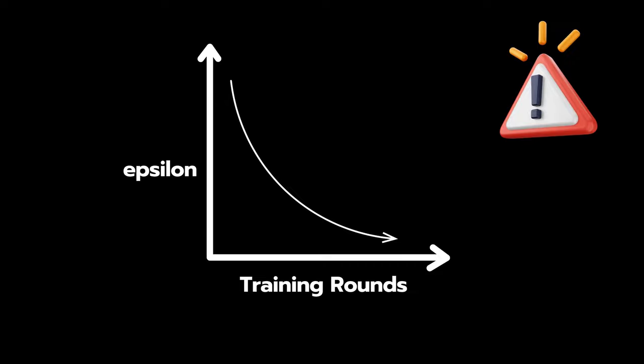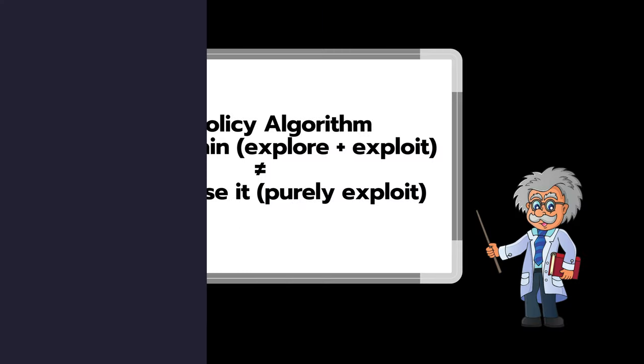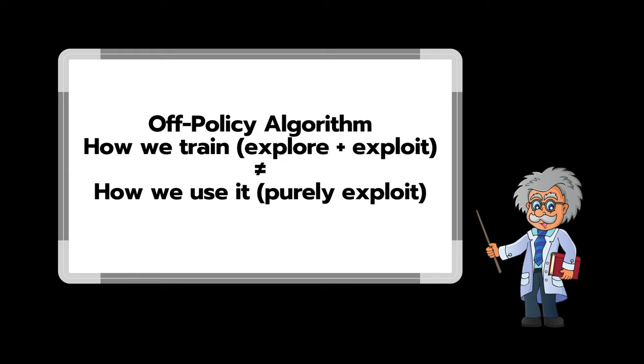Whereas when we use the algorithm, we don't use high epsilon and then slowly bring it down; we use a fixed epsilon. So off-policy means that you train in a different way, but you use the algorithm actually in real settings in a different way.